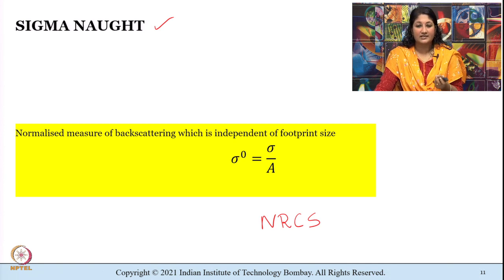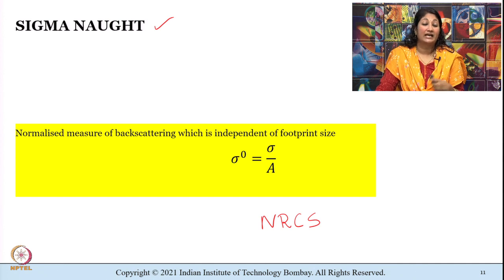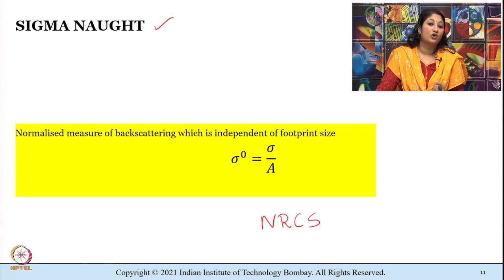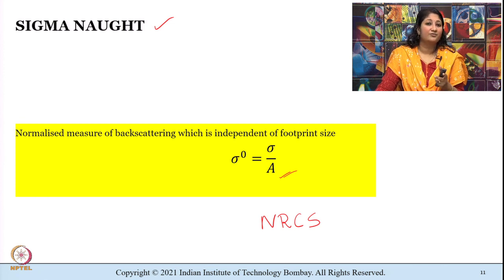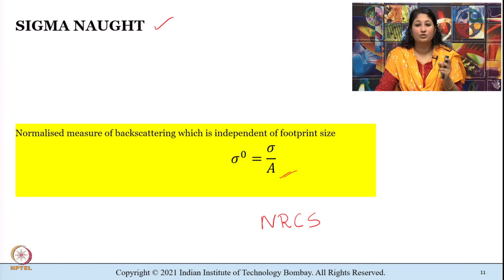Imaging radars like SAR do not measure sigma naught directly. Instead, they measure something known as radar brightness, or beta naught (β⁰). The actual geometrical area that is getting illuminated is something we do not know because of topographical variations — the actual area may be different from the predicted area. If we do not have information about topography, radar brightness (beta naught) shall be used directly as a measure of backscatter.